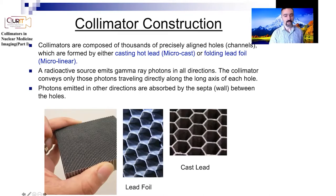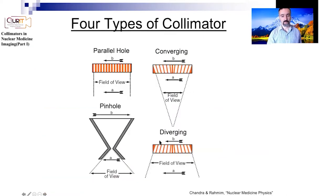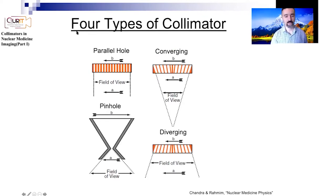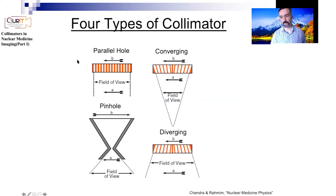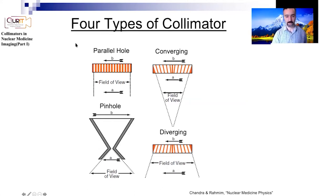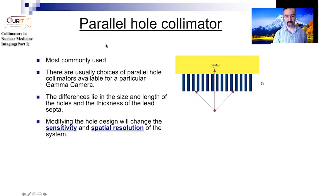There are different kinds of collimators, and today we're going to focus on parallel hole collimators. In a subsequent lecture we're going to talk about converging collimators, diverging collimators, and so-called pinhole collimators. But the most common mode of collimation used in nuclear medicine imaging is parallel holes.